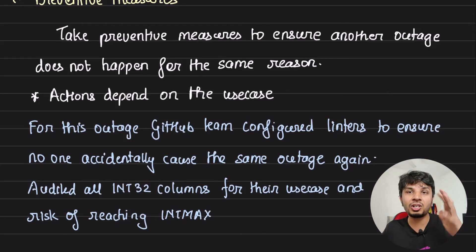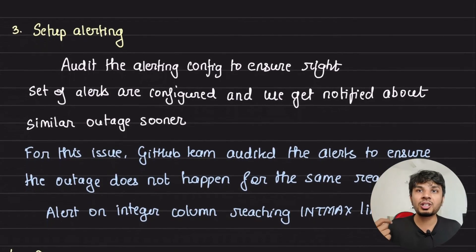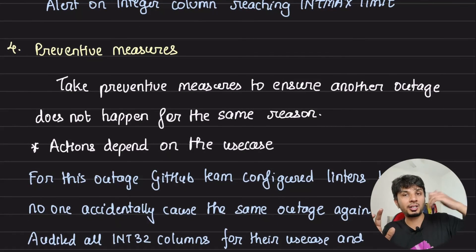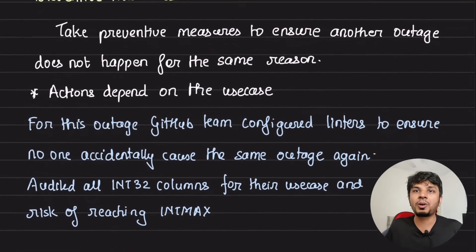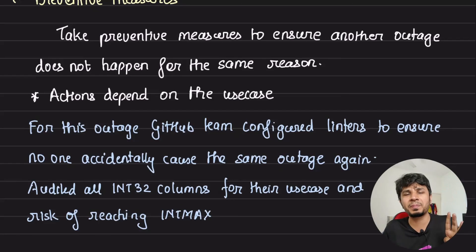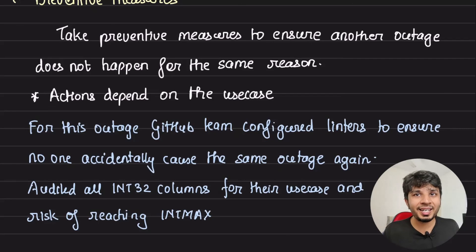So these are the four key checks after an outage: data inconsistency, cache invalidation, setting up the right set of alerting immediately after the outage, and taking preventive measures to ensure the outage doesn't happen for the same reason again. Doing these four steps would solve 80% of your problems and save 80% of your outages. It's very simple but basic, and it does a very decent job. If you liked this video give it a thumbs up, subscribe to the channel — I post three in-depth engineering videos every week.